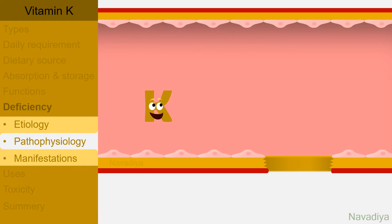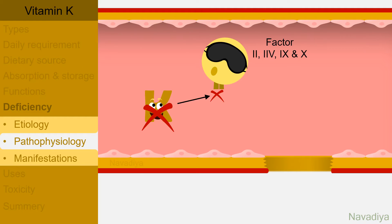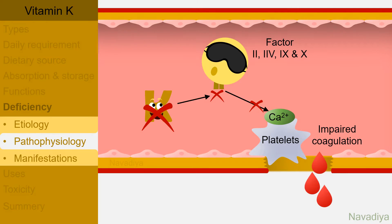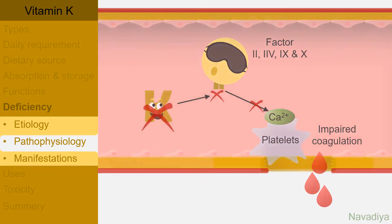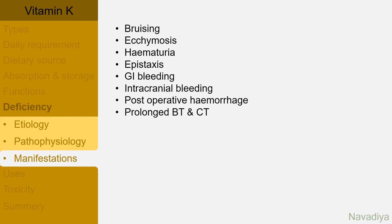Pathophysiology is simple: if you don't have vitamin K in your body, clotting factors 2, 7, 9 and 10 do not get carboxylated at glutamic acid residues. Without it, they cannot associate with calcium, so all subsequent effects are lost. This leads to impaired coagulation and increased bleeding tendency. This manifests as bruising, ecchymosis, hematuria, epistaxis, gastrointestinal bleeding, intracranial bleeding, postoperative hemorrhage, and prolonged bleeding and clotting time.